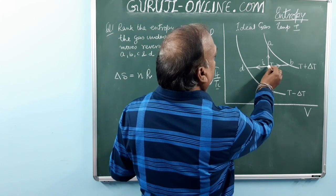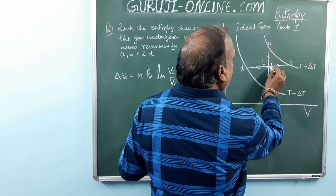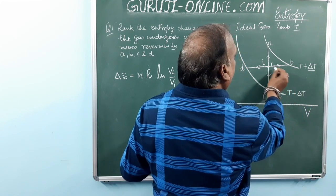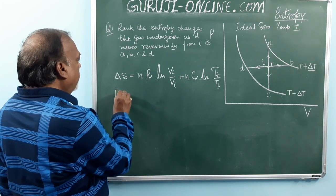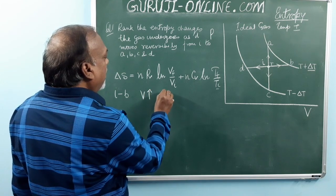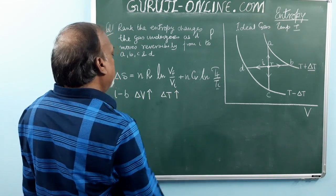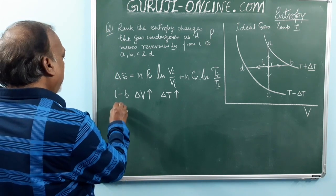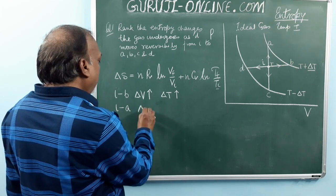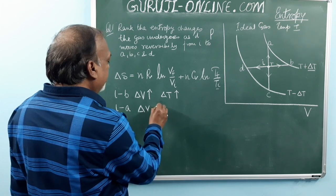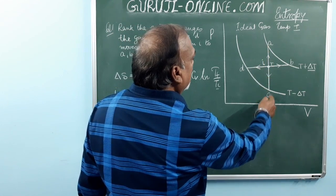When the gas moves from I to B, the temperature is increasing by delta T and volume is also increasing — so delta V is positive. From I to A, delta V is constant, meaning zero, because the volume is constant.